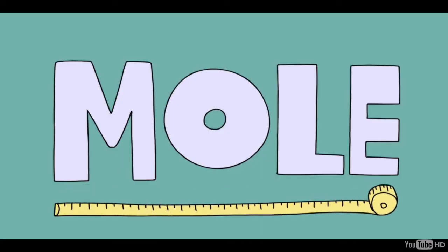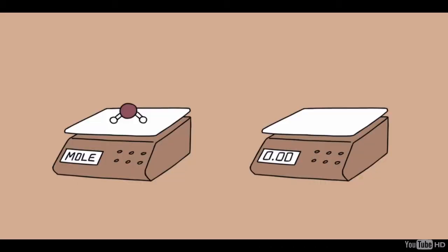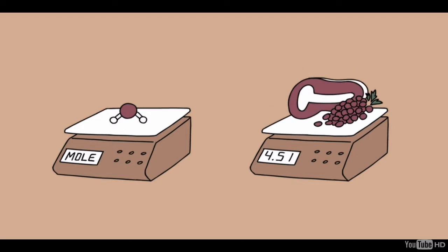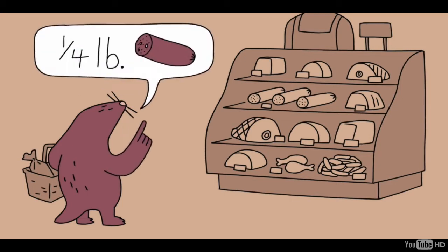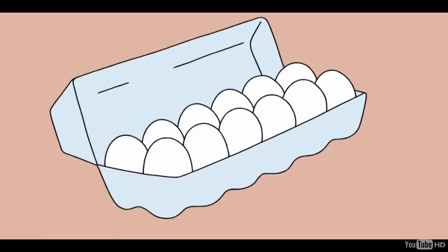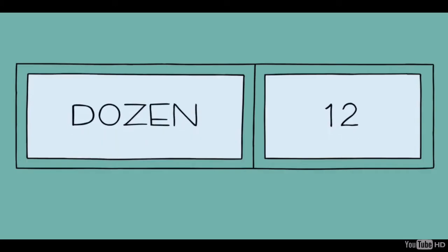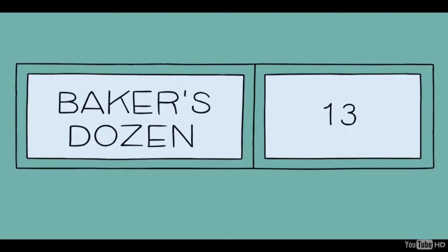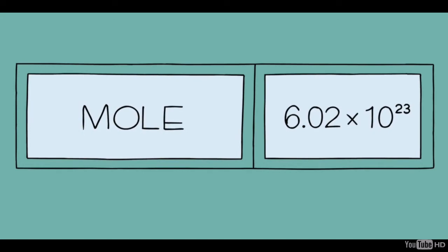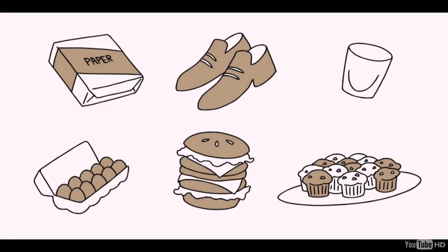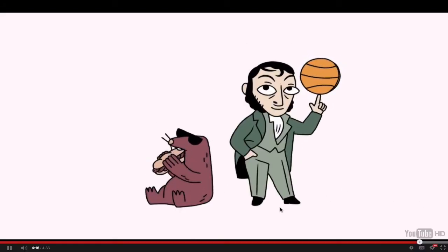Now we sort of have an idea of how large the mole is. So how do we use it? Chemists use it the same way you use pounds to buy grapes, deli meat, or eggs. You don't go to the deli counter and ask for 43 slices of salami — you buy it by the pound. When you buy eggs, you buy a dozen. A dozen is 12, a pair is 2, a baker's dozen is 13, a gross is 144, and a ream of paper is 500. A mole is really the same thing — for a chemist, a mole conjures up the number 6.02 times 10 to the 23rd.